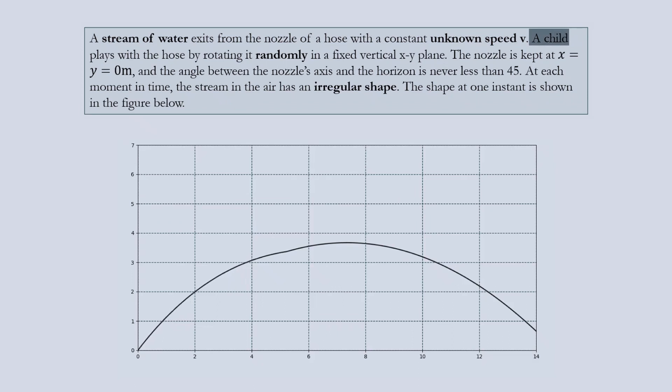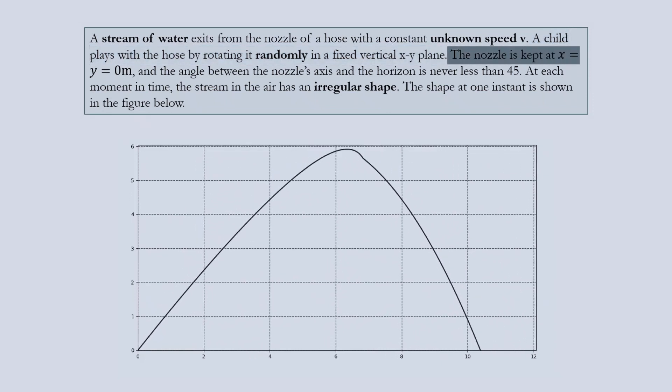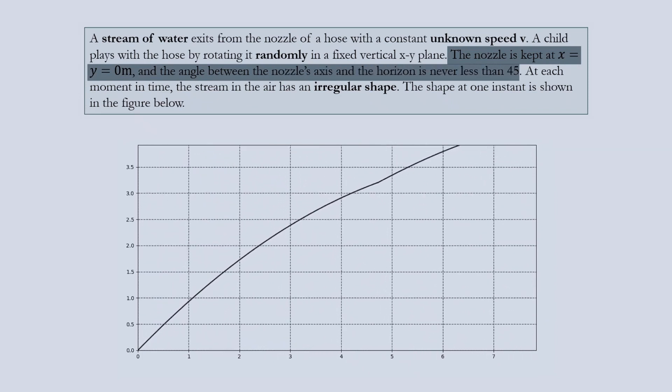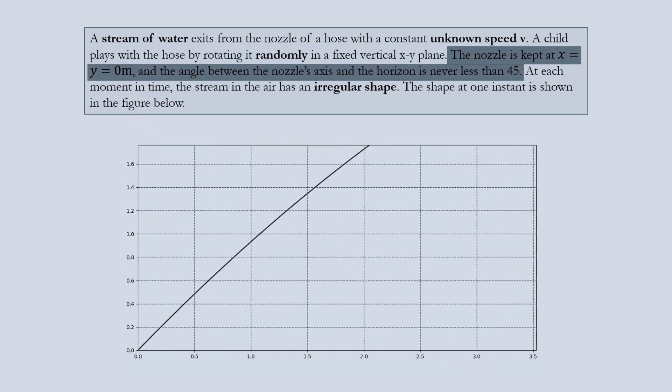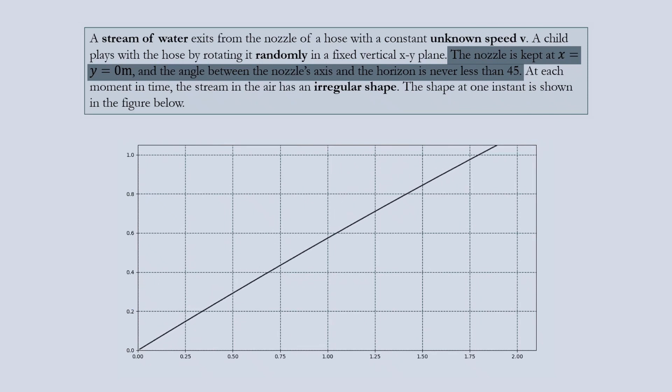A child plays with a hose by rotating it randomly in a fixed vertical xy plane. We can imagine a hose moving slowly up and down. The nozzle is kept at x and y equals zero and the angle between the nozzle's axis and the horizon is never less than 45 degrees as shown in the animation.